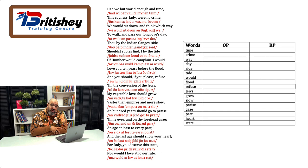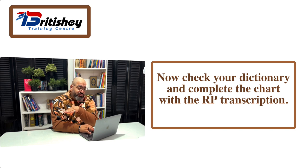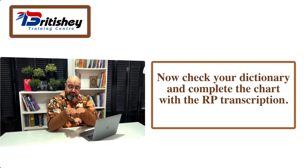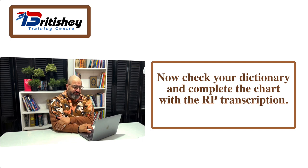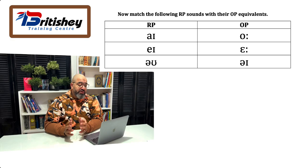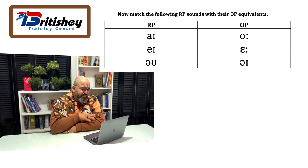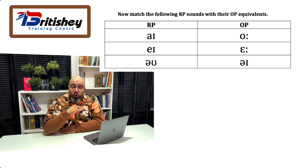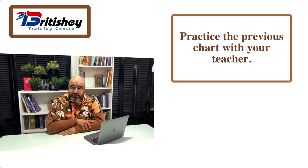A diphthong that existed in Original Pronunciation no longer exists in RP. Then question four: 'Check your dictionary and complete the chart with the RP transcription.' Students write the OP in one column and the RP alongside it, giving them the opportunity to compare and become aware of the differences. Then a matching activity: 'Match the following RP sounds with their OP equivalents' — for example, RP /aɪ/, /eɪ/, /oʊ/ are matched with their OP counterparts. Then a repetition drill where the teacher models the sounds.